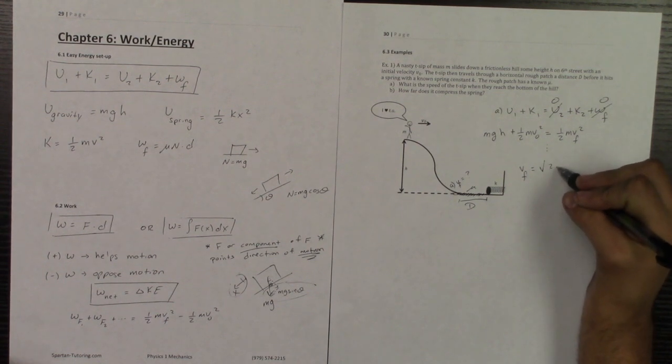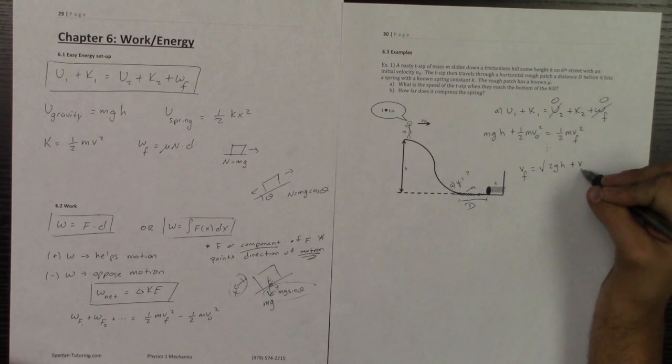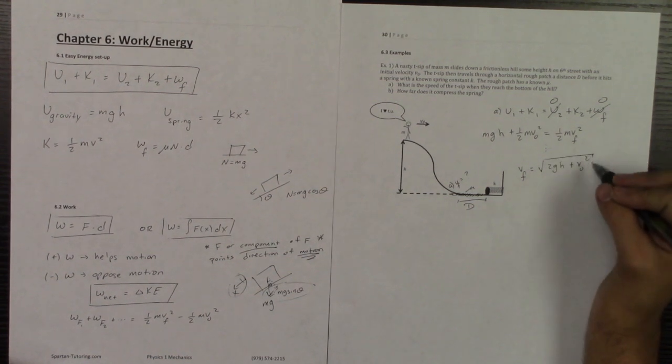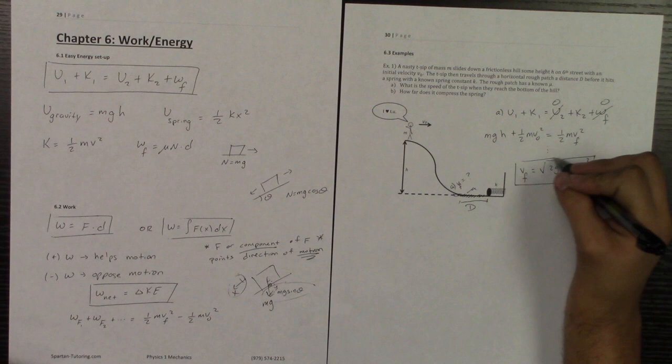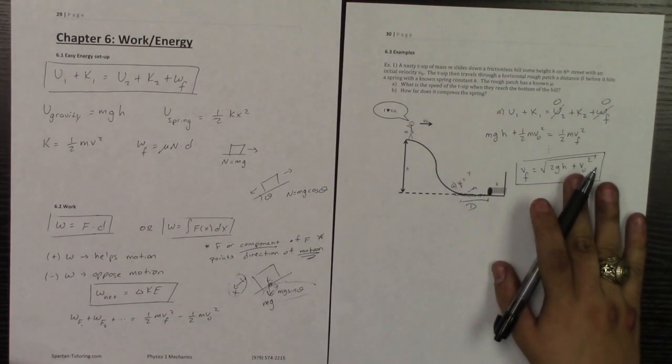And once you solve that out, you just do a little bit of algebra to solve for vf. And if you do your algebra correctly, your vf would be the square root of 2gh plus that v0 squared. Multiply the 2, divide by m, and take the square root from both sides. So that's going to be part A.